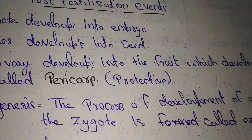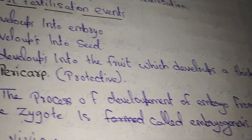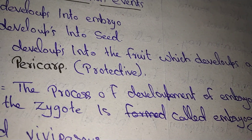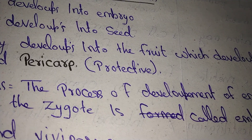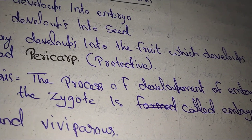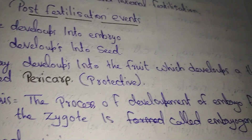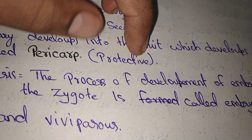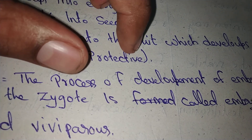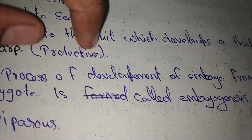The process of development of embryo from the zygote is called embryogenesis. Development of embryo from the zygote is called embryogenesis.